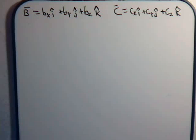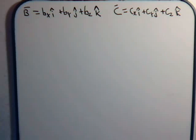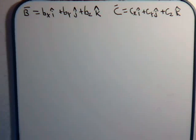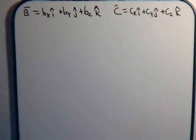In the last video, we considered some of the consequences when you take the del gradient and treat it as an independent vector in its own right. Once you do that, we asked what happens if you perform vector operations. In the last video, we looked at the consequences of taking the dot product of the del operator with different vectors. In this video, we want to briefly introduce the concept of taking the cross product of the del operator with different vectors.